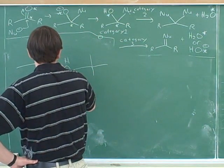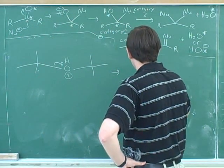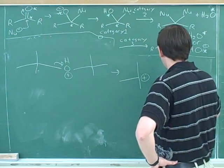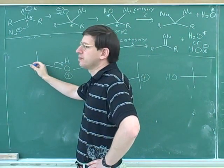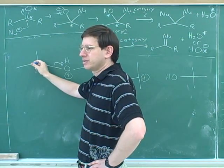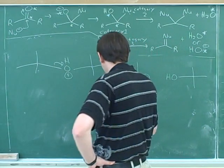So something that might happen here is... First, this can just leave by itself if the alpha carbon is tertiary. This can just leave by itself if the alpha carbon is tertiary or maybe secondary. And now we can have a base come in.